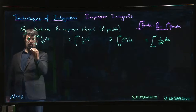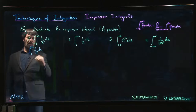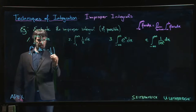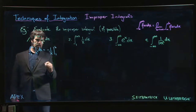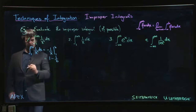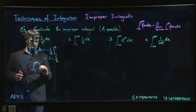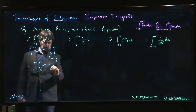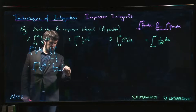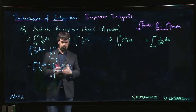So we evaluate the integral from 1 to b of 1/x² dx. This is x to the minus 2, so we get minus 1/x evaluated from 1 to b, giving us 1 minus 1/b. That means the integral from 1 to infinity of 1/x² dx is the limit as b goes to infinity of 1 minus 1/b, which is 1.